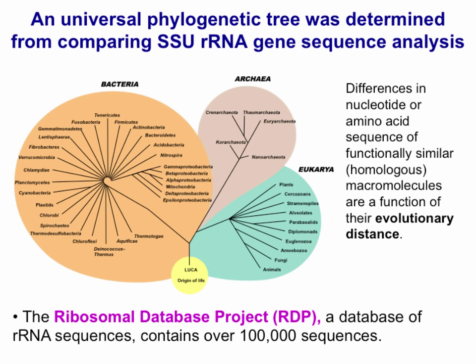We have this unique ancestor, LUCA, which eventually diverged into the lineage of bacteria and the lineage of archaea. And eventually that archaeal ancestor also diverged into what is now the archaea domain and the eukarya domain. That is why archaea and eukarya share certain similarities not present in bacteria — for example, their ribosomes are not sensitive to the antibiotics we use against bacteria, because the ribosome structure in archaea and eukarya are very similar.